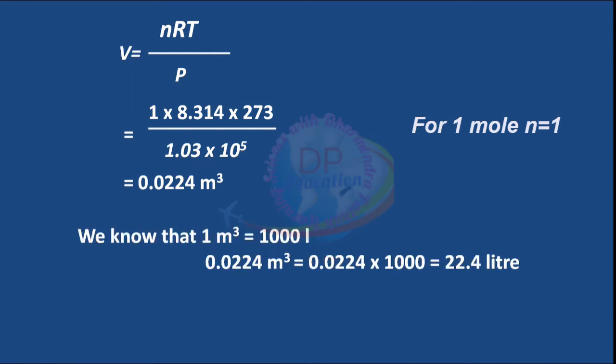We know that 1 meter cube equals 1000 liter. Therefore 0.0224 meter cube equals 0.0224 times 1000, which equals 22.4 liter.